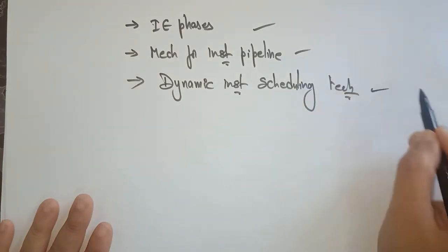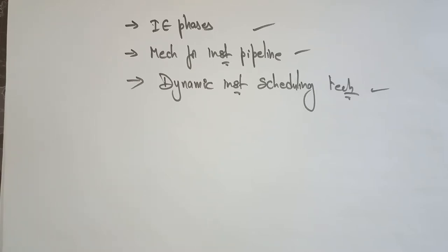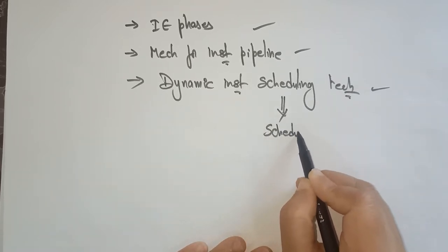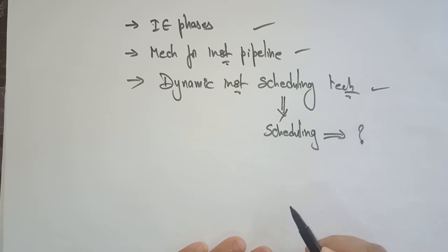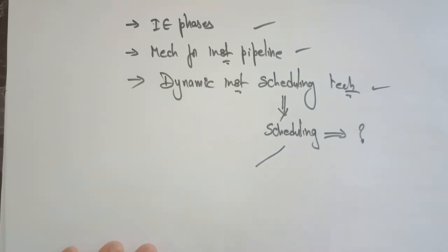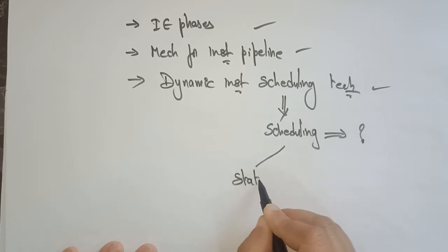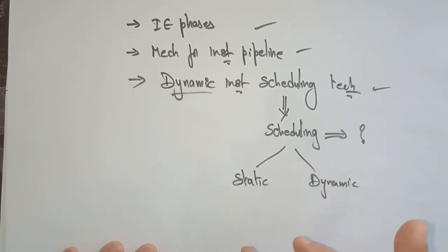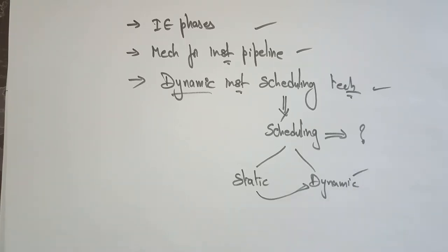This is the third method for improving the pipeline processor performance. Before going to understand dynamic instruction scheduling, I want to give an introduction regarding scheduling — what exactly scheduling is, why we use it, and the two types: static and dynamic. When we talk about dynamic, obviously static scheduling is also there. So why are we shifting from static to dynamic, and how does dynamic instruction scheduling improve pipeline processor performance?